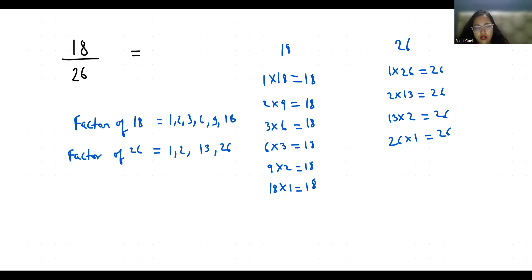So common factors are 1 and 2. Highest common factor is 2 among them. So we will divide it by 2, which is equal to 9 by 13. I hope it's clear and you find it useful.